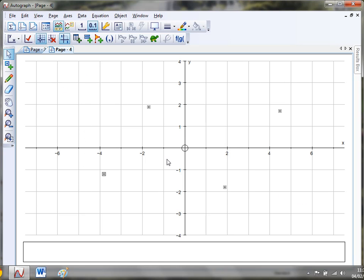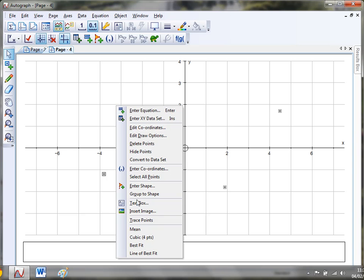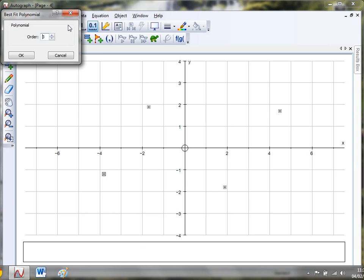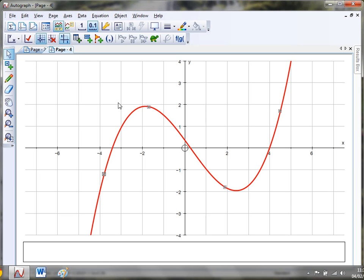Then go to select mode and just drag around all those points so they're selected. Right click and you get this down here, a best fit option. Now the order of best fit that you can have is always one fewer than the number of points, so I'm restricted to an order of three here. So I've got four points, click OK, and it'll fit me a cubic of best fit.